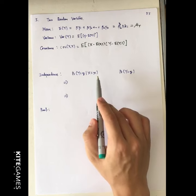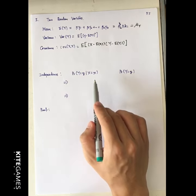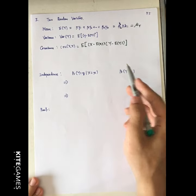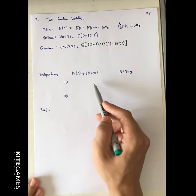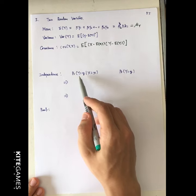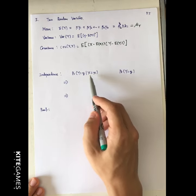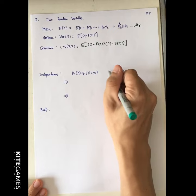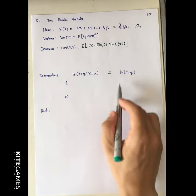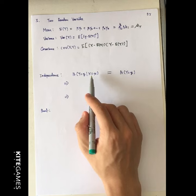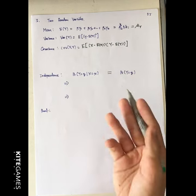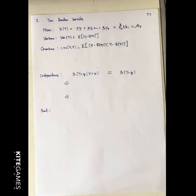Next we talk about the concept of independence. Independence means that if x and y are independent, then the probability of y equaling some value given x equals some value is exactly equal to the probability that y equals that value. This shows that x has no additional information affecting the probability of y, which is why we call this independence.